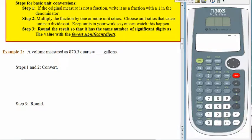We have a volume that was measured — and the word 'measured' is really important. This is 870.3 quarts, but that's a measured quantity, not exactly 870.3 quarts — we've got that little bit of error associated with every measurement. So we want to know about how many gallons that is.